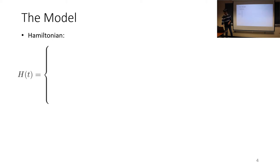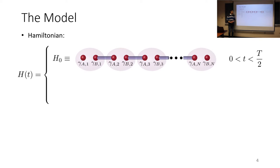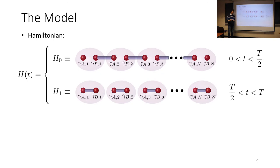So now on to the model. The Hamiltonian that we use is divided into two parts. So in the first half cycle, we have our Hamiltonian being represented in terms of Majoranas in the Kitaev chain. Here, the off-site couplings are turned on, while in the second half cycle, the on-site couplings between the Majoranas are turned on instead.